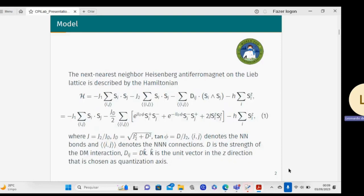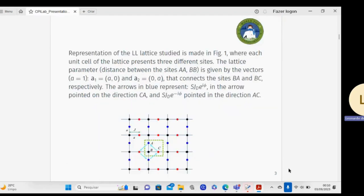The nearest neighbor has a magnetic field magnet on the Lieb lattice, described by the Hamiltonian, where we have the exchange interaction renormalized given by this equation. The phase angle is defined by the ratio of the Dzyaloshinskii-Moriya strength and J2 coupling, where I consider the strength of the DM interaction in the direction that is twice as a quantization axis.